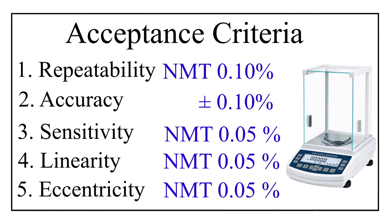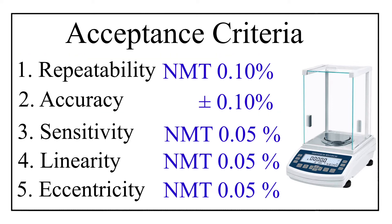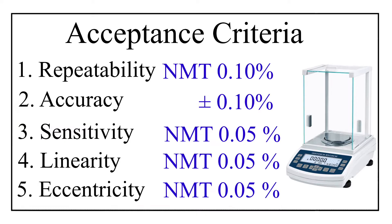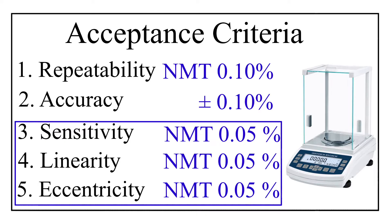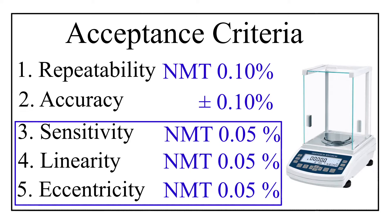To summarize, repeatability and accuracy have the same acceptance criteria, that is not more than 0.10%. And the three parameters — sensitivity, linearity, and eccentricity — share the same acceptance criteria of not more than 0.05%. That covers the acceptance criteria for all calibration parameters of a balance.